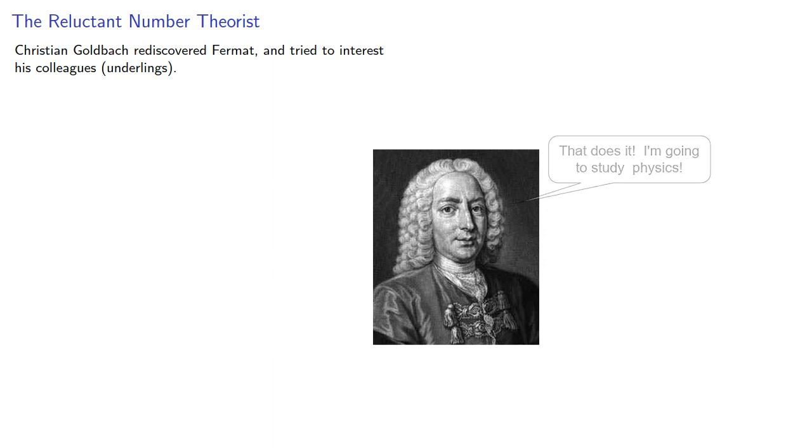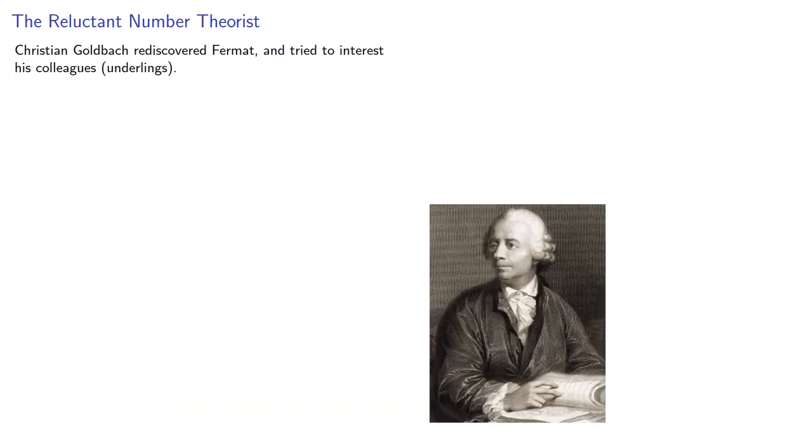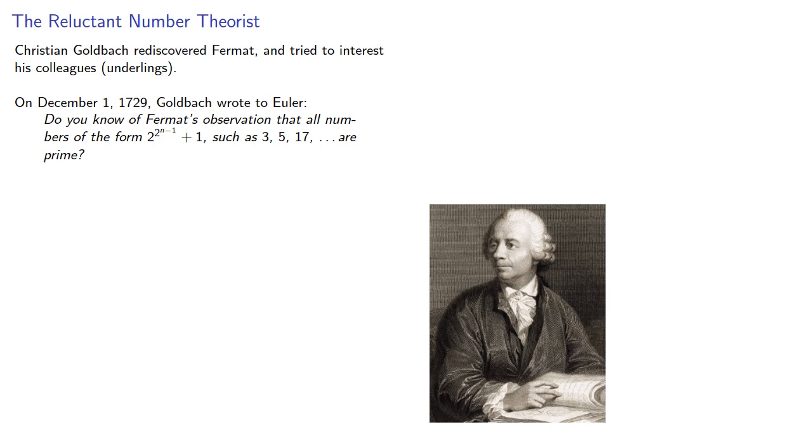On December 1, 1729, Goldbach wrote to Euler: Do you know of Fermat's observation that all numbers of the form 2 to the 2 to the n plus 1, such as 3, 5, 17, and so on, are prime?